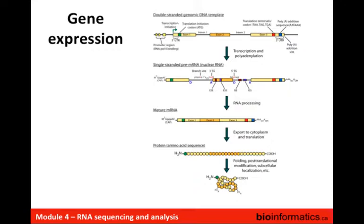Just as a quick review of the biology — for most of you I'm sure this will be well understood, but just so we're all on the same page — I usually show this cartoon of gene expression, starting with double-stranded genomic DNA template which has various features we'll talk about in terms of gene annotation. In this example you have three exons and two introns, and those exons have features — there's a promoter region and so on.